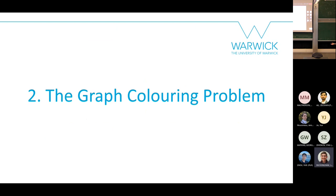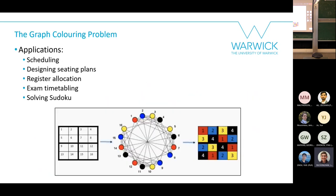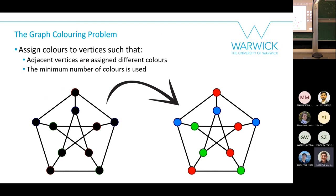The goal of the graph coloring problem is to assign colors to vertices such that adjacent vertices have different colors, using the minimum number of colors possible. Here is an example: the coloring on the right uses three colors, and no two adjacent vertices share the same color.